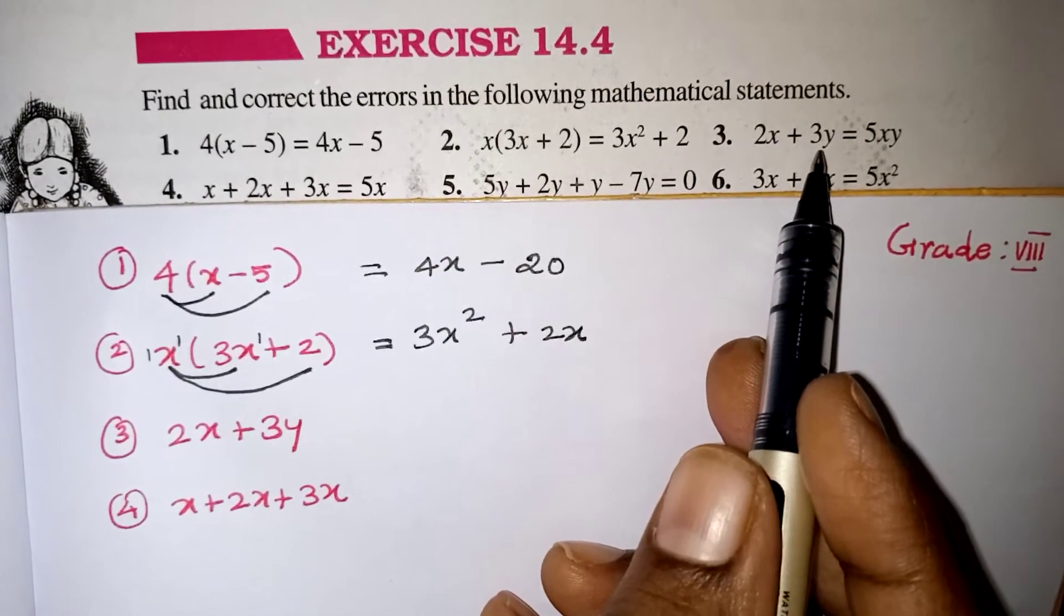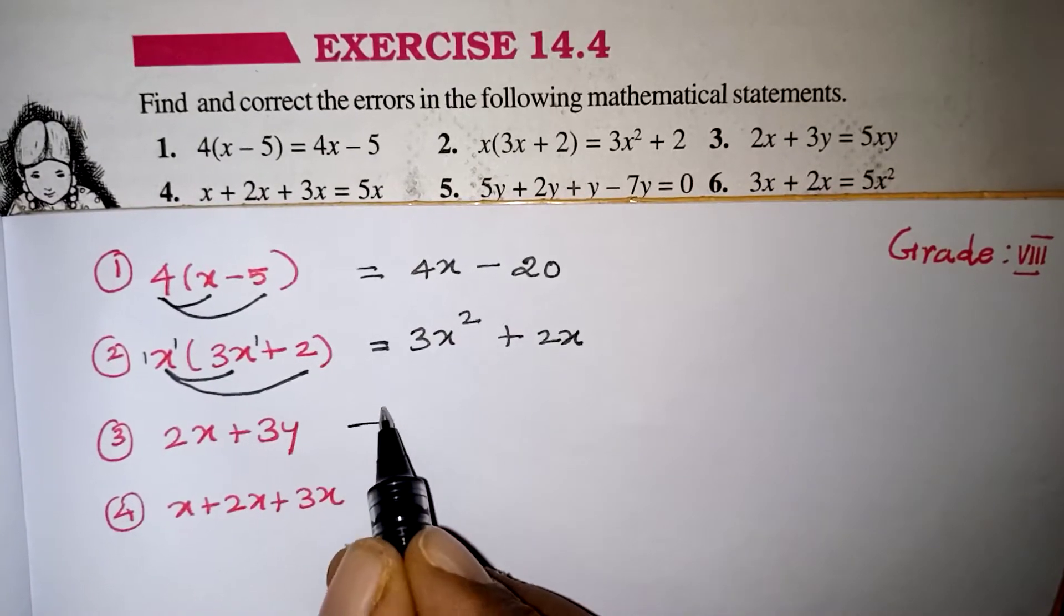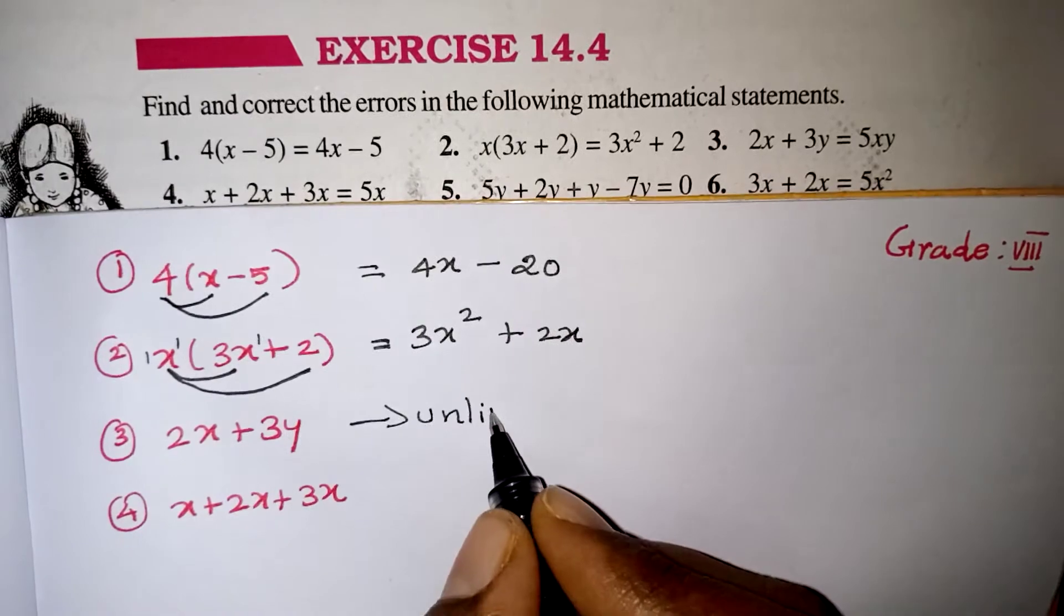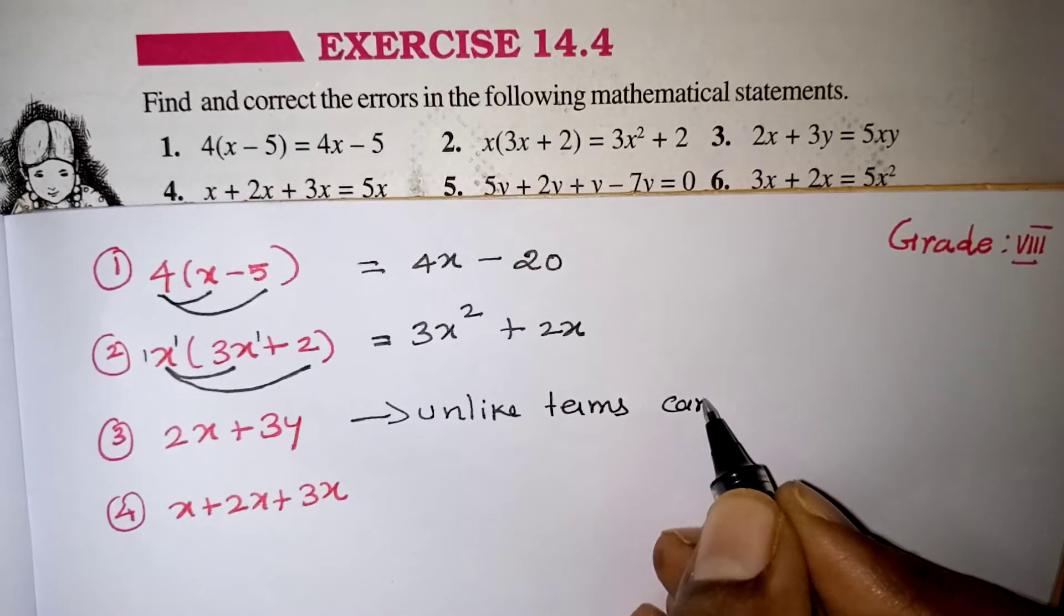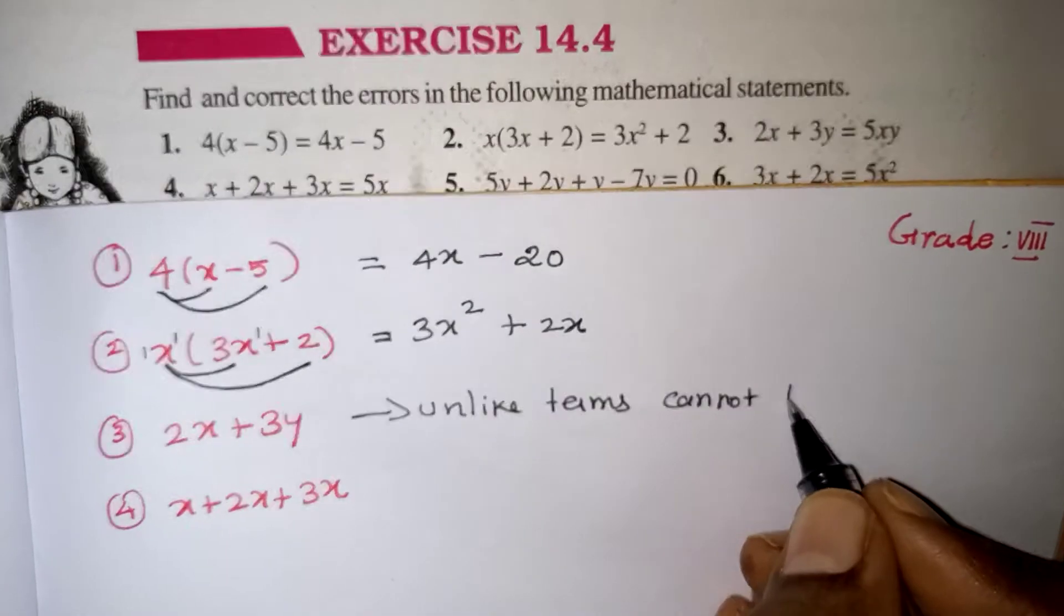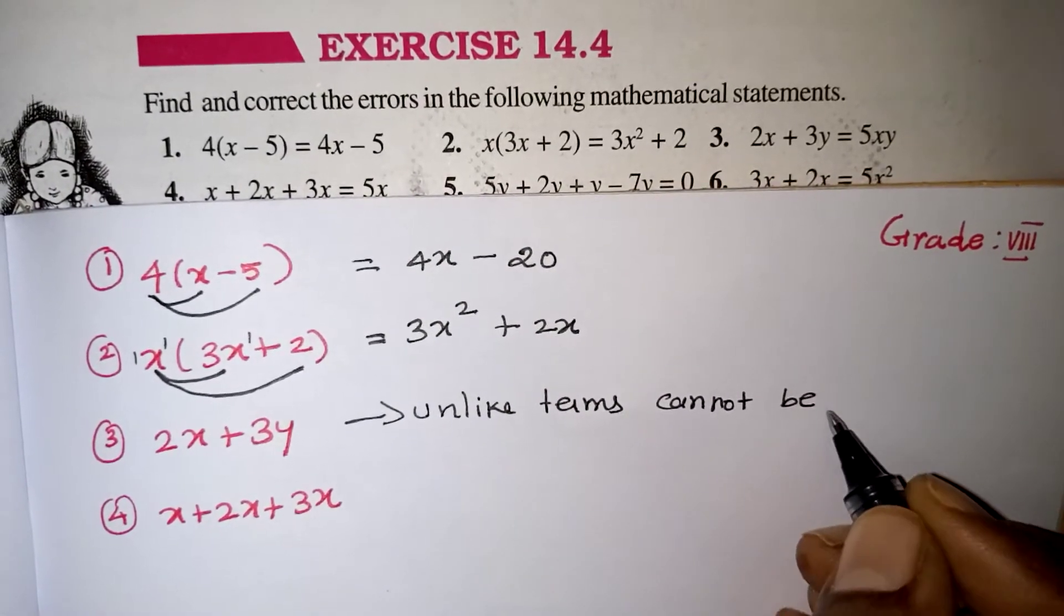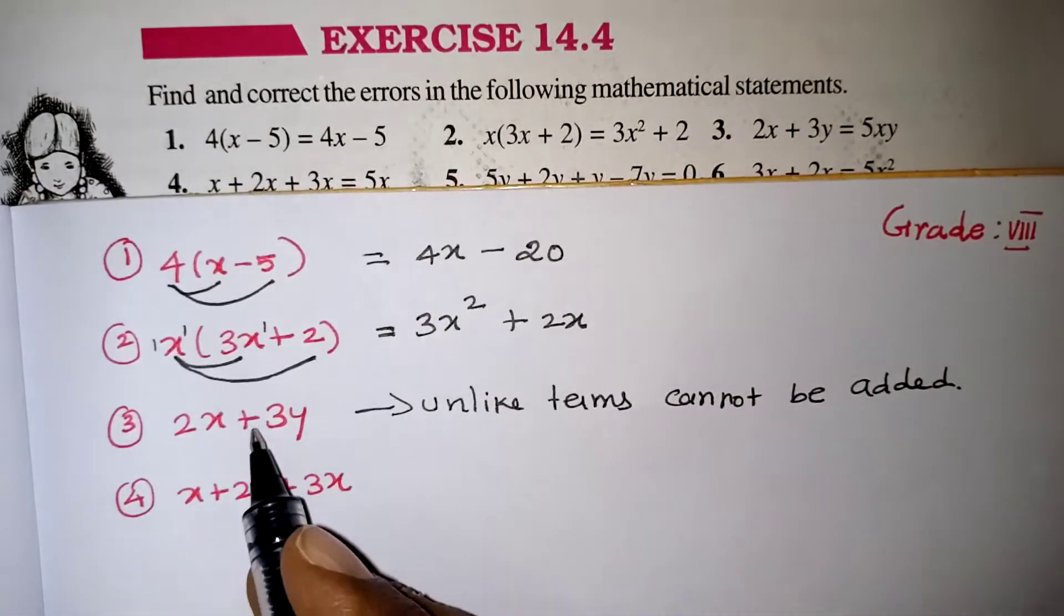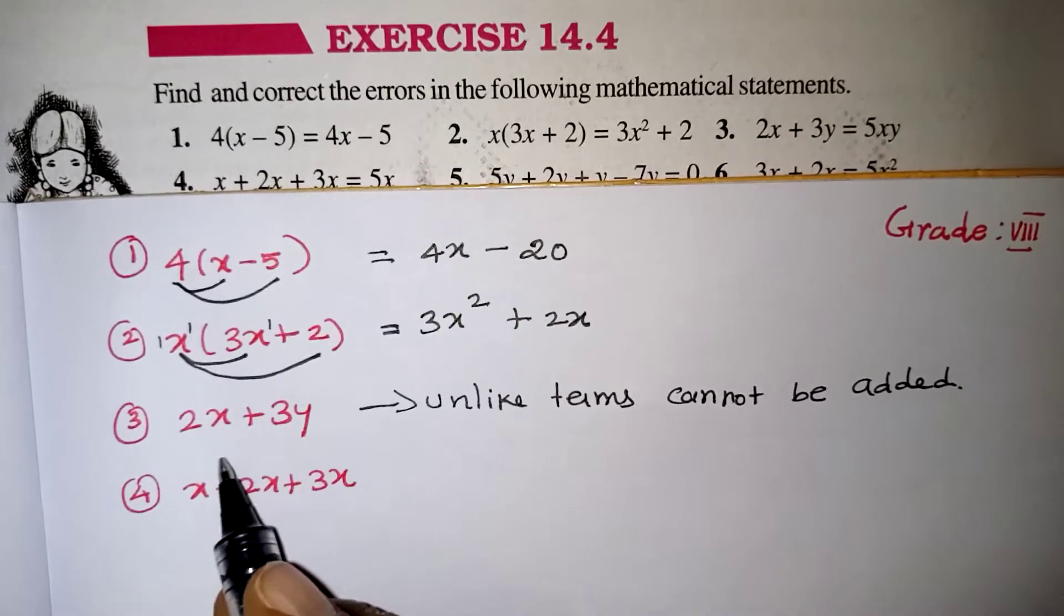Coming to this problem, 2x plus 3y is equal to 5xy is given. Actually 2x plus 3y both are unlike terms. It cannot be added. x and y terms cannot be added. So unlike terms cannot be added, we have to say. Actually why they have given 5xy, it is given wrongly, cannot be added. If it is a multiplication, we can do it. 2 times 3 is 6, xy we can write it. For addition, we cannot do anything.